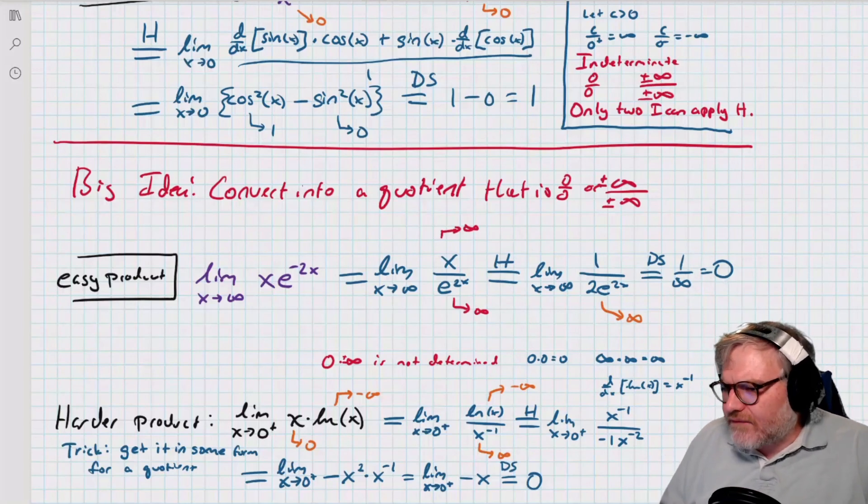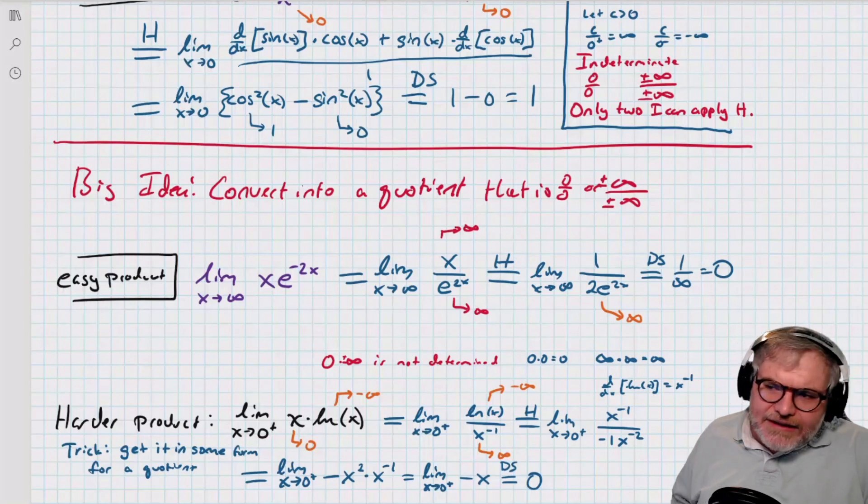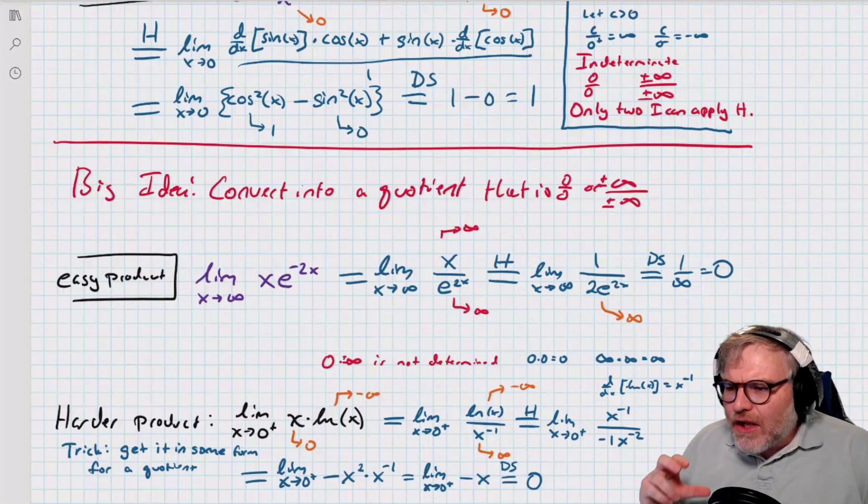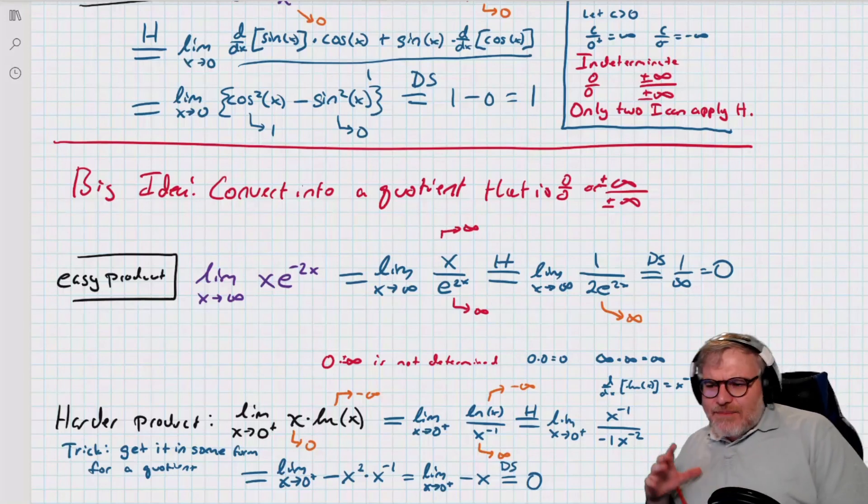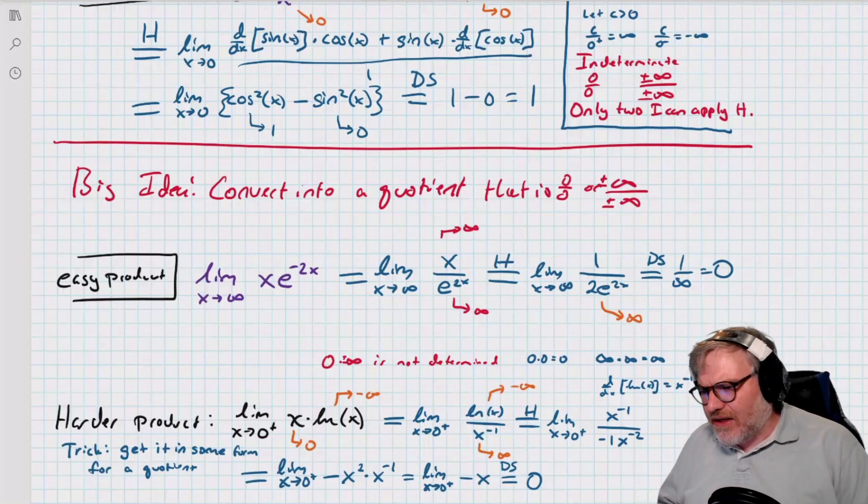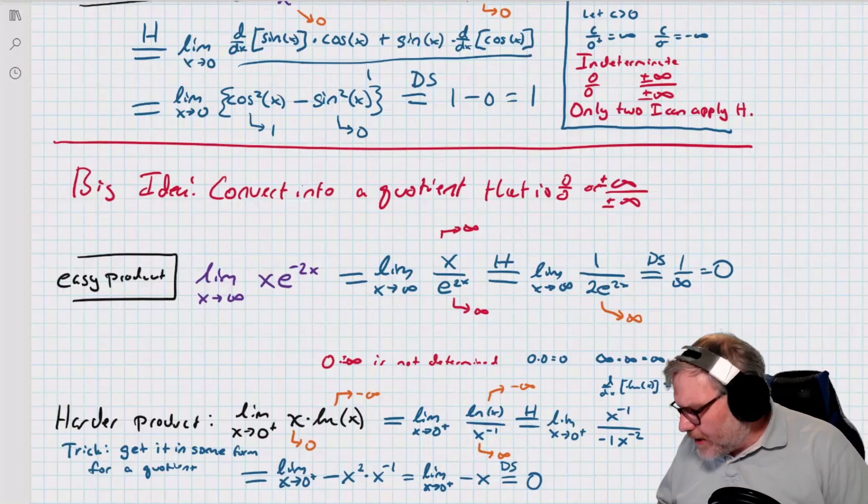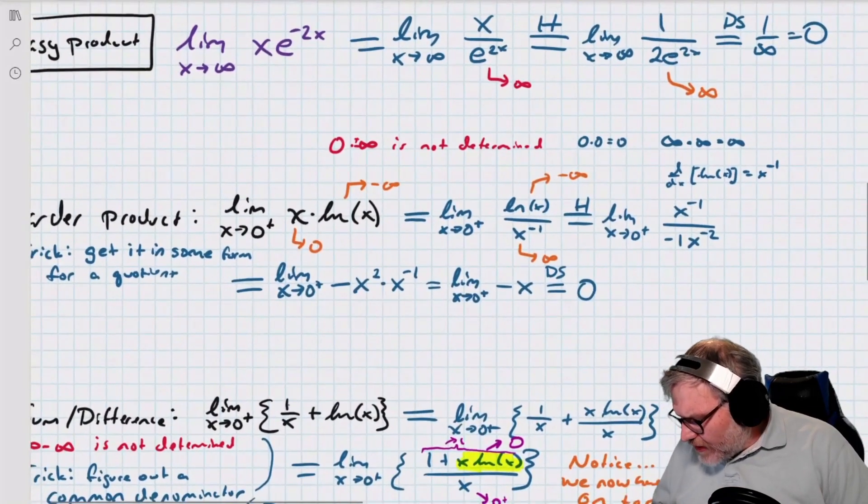So these are these easier product ones. And those are the sorts of things you see on the test. Because some of these products, you can wind up, if you don't do them right, you can wind up doing them forever. So the easy products, we like these for the test. Harder products, they're fun, but they're a little bit hard.